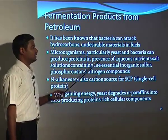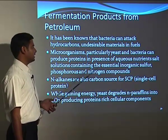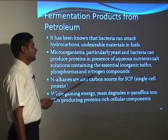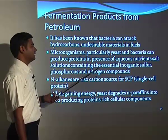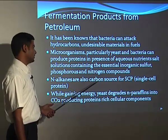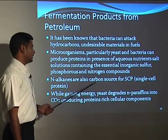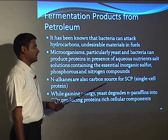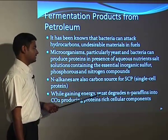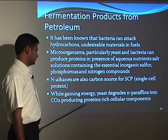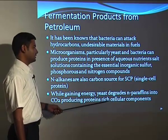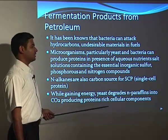Microorganisms — particularly yeast and bacteria — can produce proteins in the presence of an aqueous nutrient salt solution containing essential anaerobic sulfur, phosphorus, and nitrogen compounds. N-alkanes are also a carbon source for SCP, that is single cell protein. While gaining energy, yeast degrades N-paraffins into CO₂, producing protein-rich cellular components.